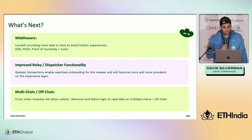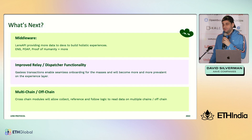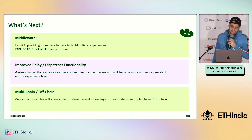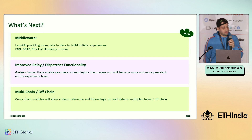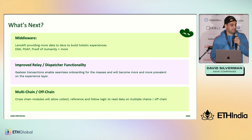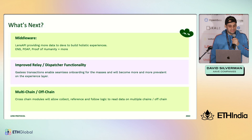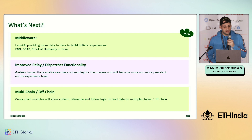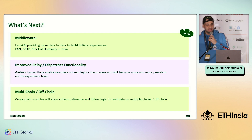So what's next and where are we going? On the middleware layer, we are going to be adding more and more data providers to allow you as devs to build holistic experiences. We already mentioned ENS, POAPs, Proof of Humanity, and WorldCoin, and we have many more coming out. If there's a protocol you want, please stop by the table. We also have this concept called Dispatcher and Relay, which allow applications to pay for gas on behalf of users, enabling seamless onboarding for the masses. Already we have done 4.5 million transactions since we released this feature in June.